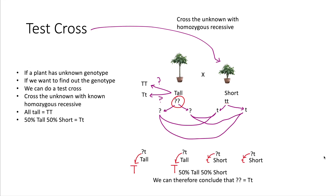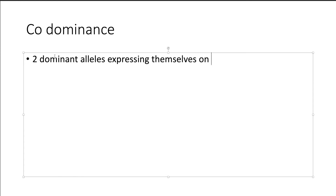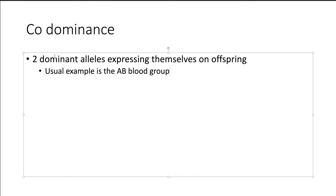Next we move on to the idea of co-dominance. Earlier we talked about the height of plants — if you have one big T allele, you are expressed as a tall plant. However, there is a concept called co-dominance: two dominant alleles that each encode for a different phenotype. If they come together, they will be co-expressed — both expressed together in the offspring.